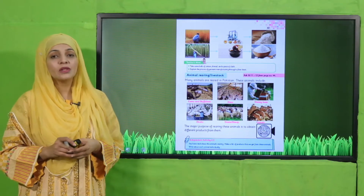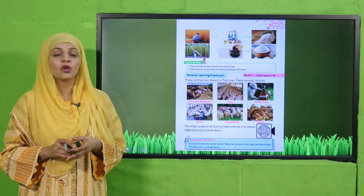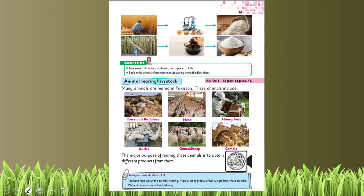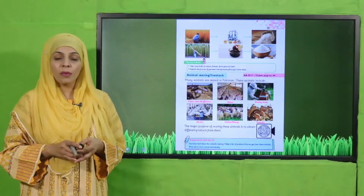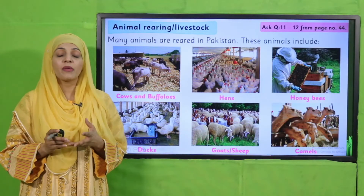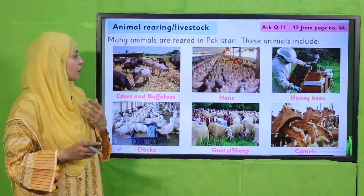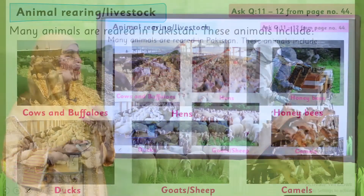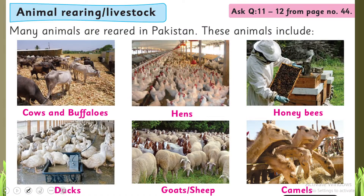I request you all to please open page number 41 in your GK2 books. I hope everybody has opened the page. Let's quickly have a look at the pictures first. On the screen you can see pictures of cows and buffaloes, then hens, honeybees, ducks, goats, sheep, and camels — these are all livestock.